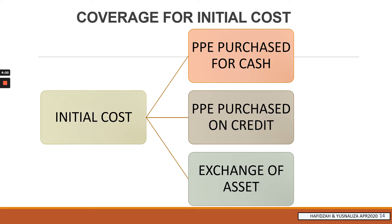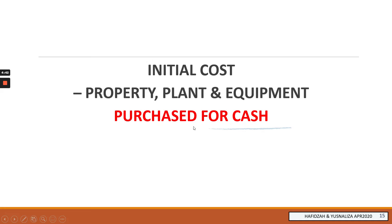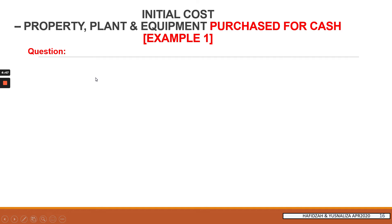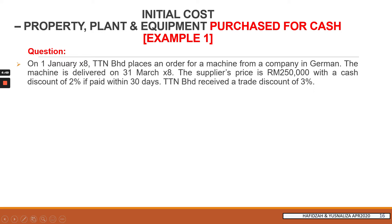Now we are going to look at the initial cost for property, plant and equipment purchased for cash, purchased on credit where you are given a credit period to settle payment, and also acquired by exchange of asset. We start with the first example: TTN, a reporting entity that places an order for a machine purchased from Germany and delivered to the company on 31st March.